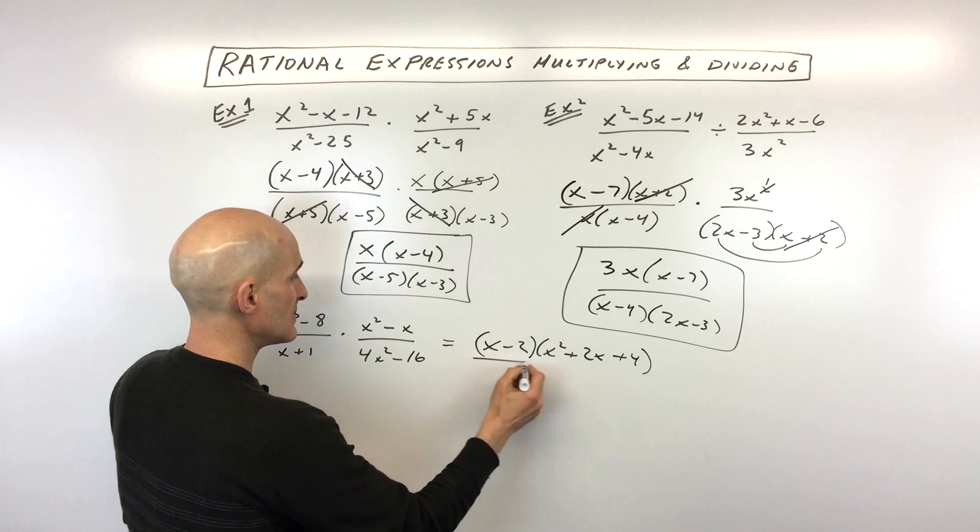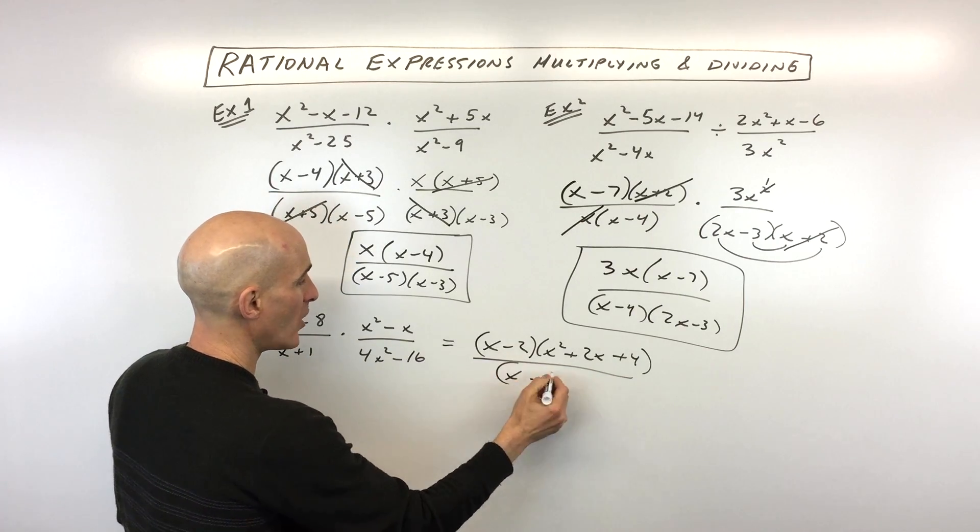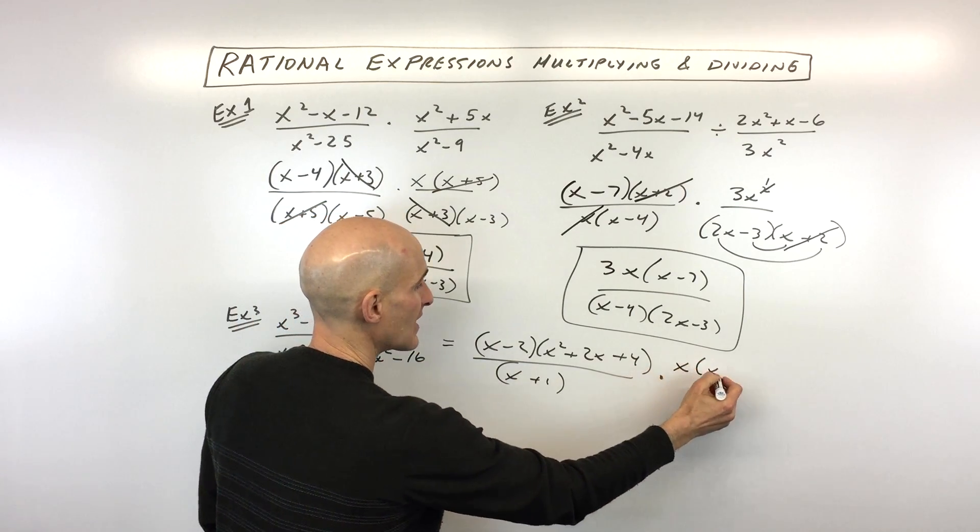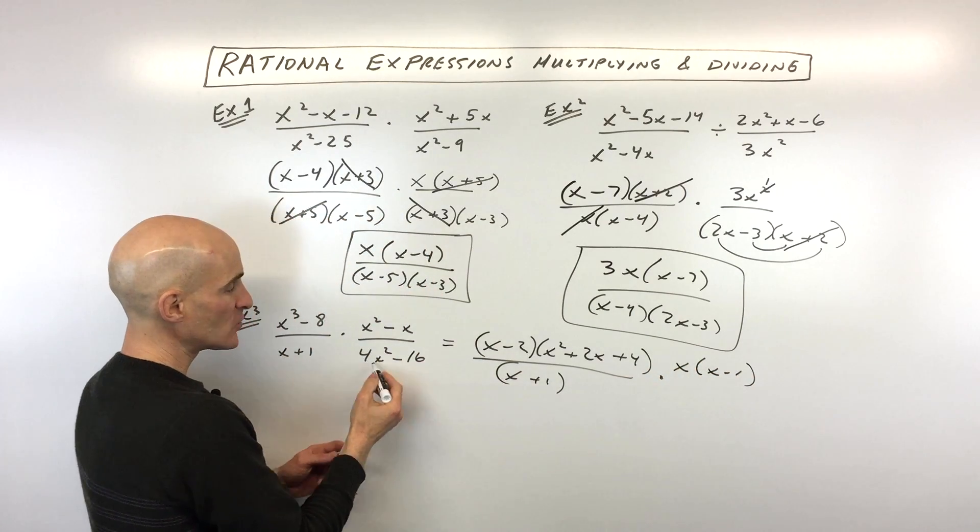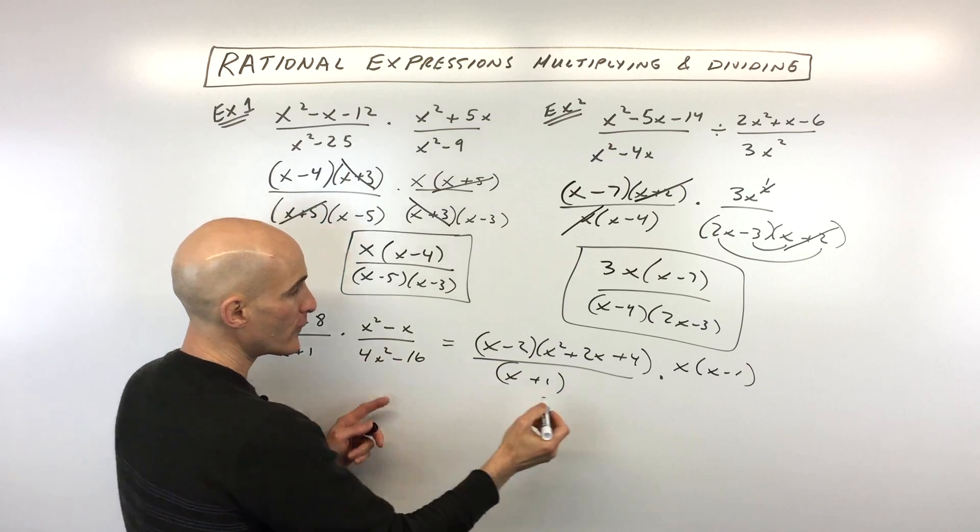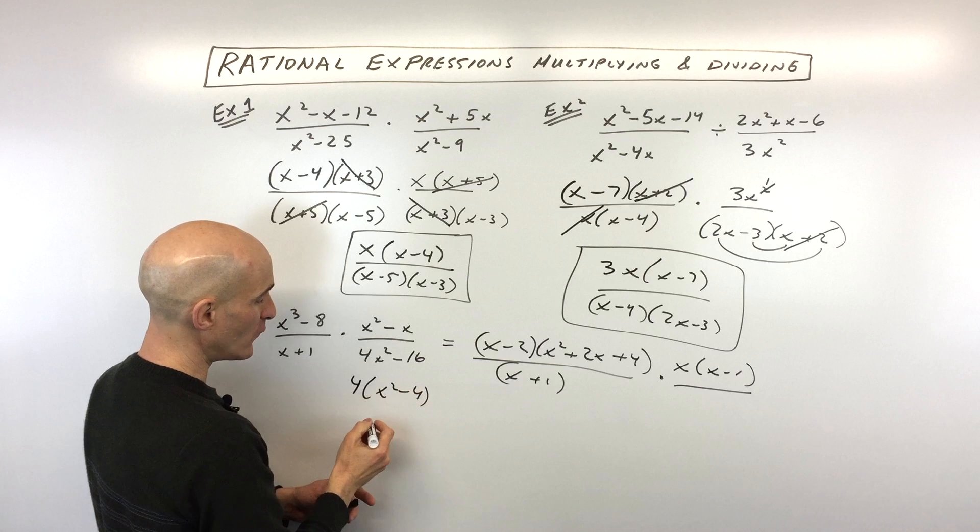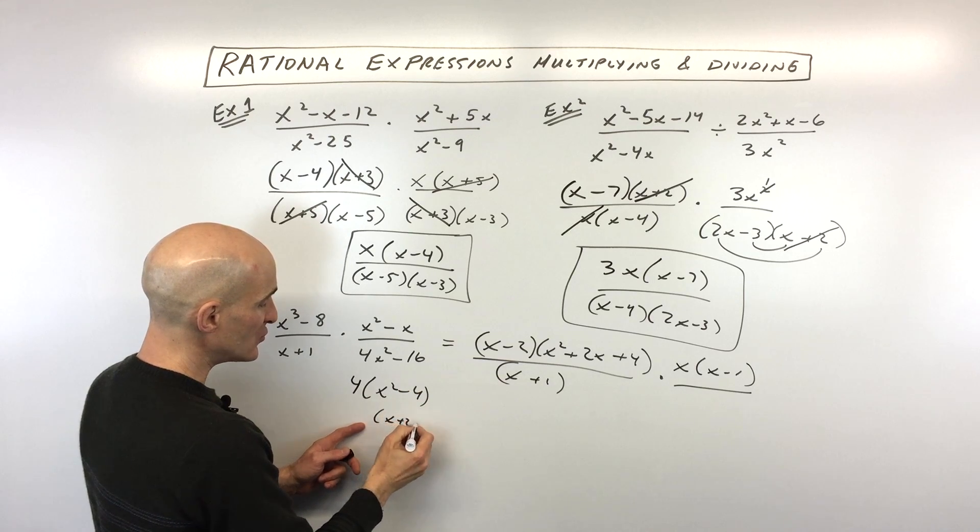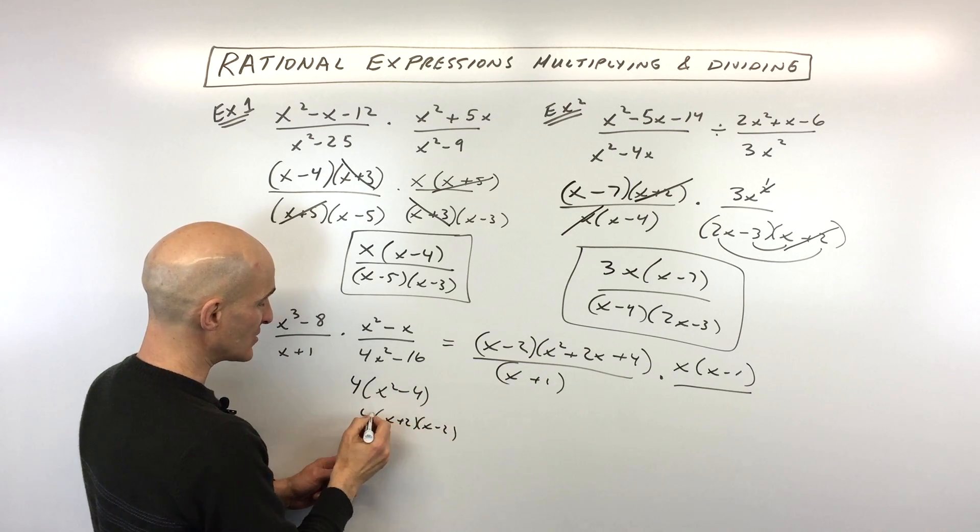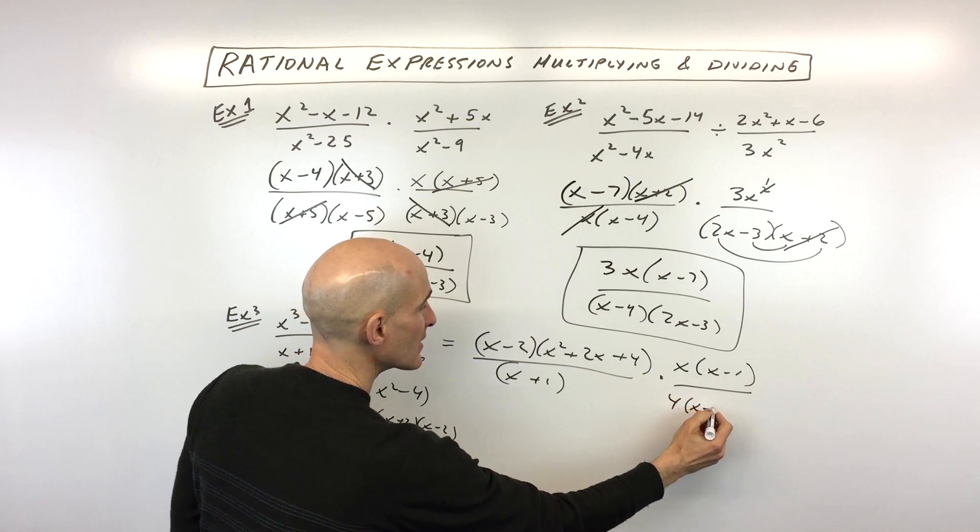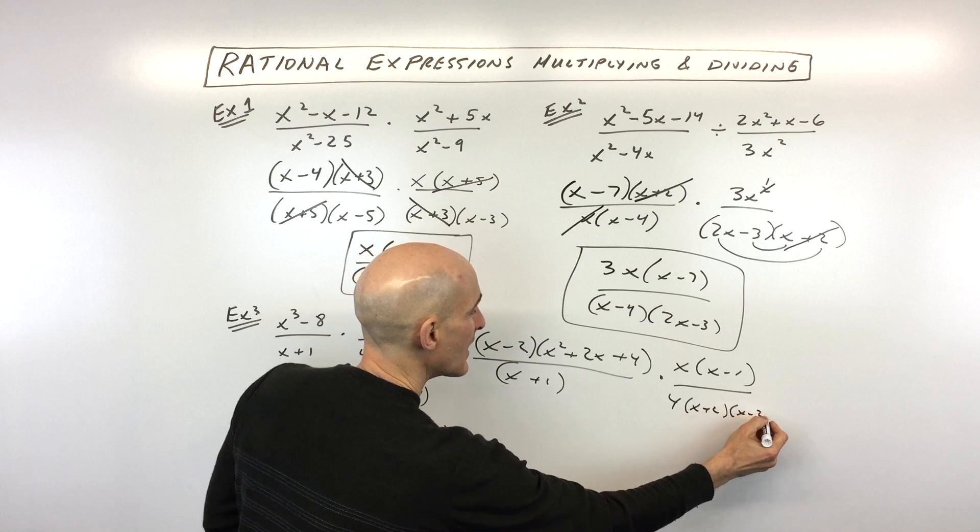And then, let's see, this denominator we really can't factor, so that's just x plus 1. And then this one we can factor out an x, so that's going to be x times x minus 1. And then this one we can actually factor out a 4 first. So if we factor out a 4, you can see we have x squared minus 4. And then this is really like a difference of 2 squares, x plus 2x minus 2, and we bring down the 4. So let's put all that over here in the denominator, x plus 2x minus 2.